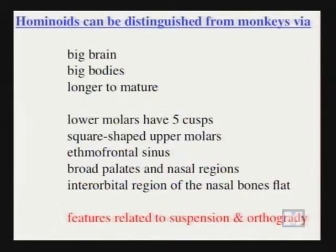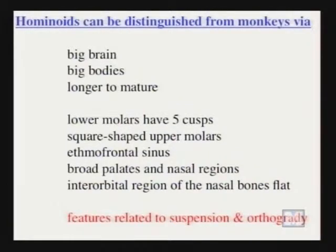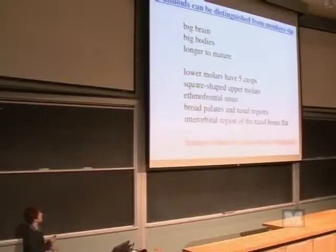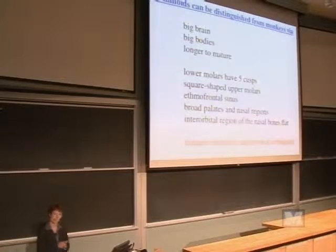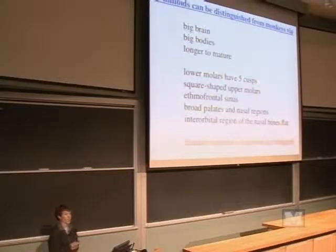In order to recognize a hominoid or ape in the fossil record, we have to know what features to look for to distinguish them from a monkey. We can look at living apes and monkeys for clues. Hominoids tend to be large-bodied — think of a gorilla or chimp — and they have relatively large brains for their body size. They also tend to live longer and take longer to grow up, and these three factors are probably tightly correlated.